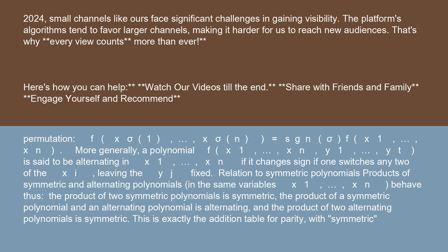Relation to symmetric polynomials: products of symmetric and alternating polynomials in the same variables x1, ..., xn behave thus: the product of two symmetric polynomials is symmetric; the product of a symmetric polynomial and an alternating polynomial is alternating; and the product of two alternating polynomials is symmetric.